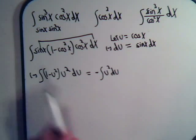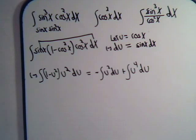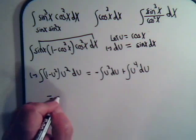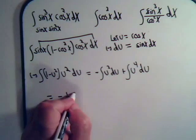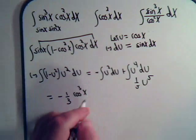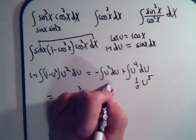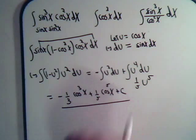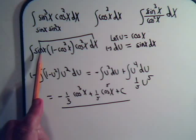We can do that right away. This equals minus one-third u cubed, but u is cosine of x, so we have minus one-third cosine cubed of x, and then plus one-fifth u to the fifth, which is plus one-fifth cosine to the fifth of x. And that's the solution. So again, for the one raised to the odd power, we write it out and break it up like that — it sets us up for a u-substitution.